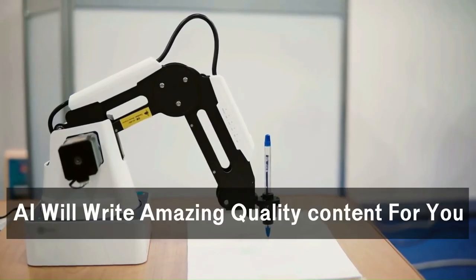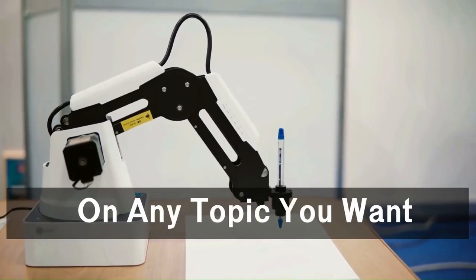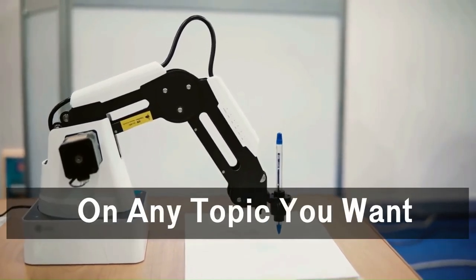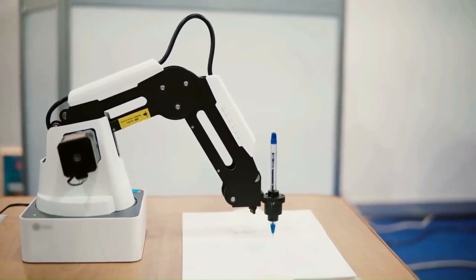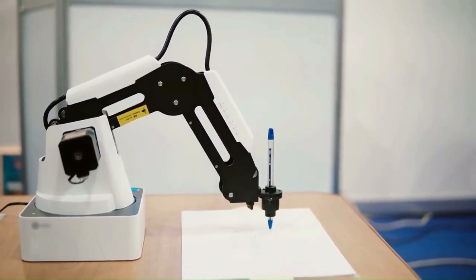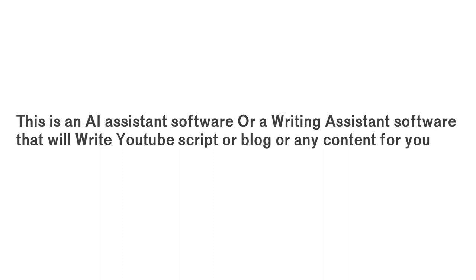The interesting thing is AI is also involved in our content writing work. AI will write amazing quality content for you on any topic you want. In today's video, I'm going to introduce a new AI writing assistant software called Writer — an AI assistant software that writes a YouTube script, a blog, or any content for you. This software writes a script or a blog on any topic within seconds, which is absolutely incredible.